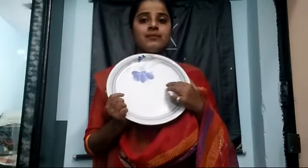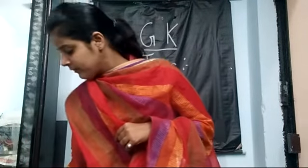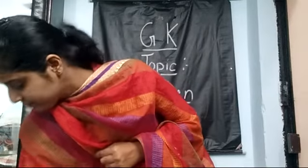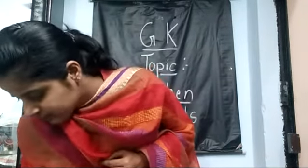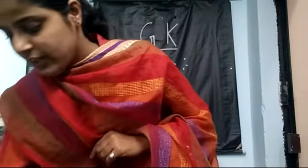What is this? Plate. Knife. What is this? Knife. Spoon. What is this? Spoon. What is this? Bowl. What is this? Bowl. And tell me, what is this? Glass. These were the kitchen objects.